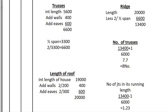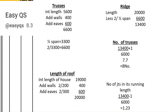To find the number of trusses, first we shall find the size of the truss. The internal length of the house is 5600. If we add the walls which are 400 and the eaves which are 300 on both sides (600), the total span of the truss will be 6600. Half of the span will be half of 6600, which is 3300.